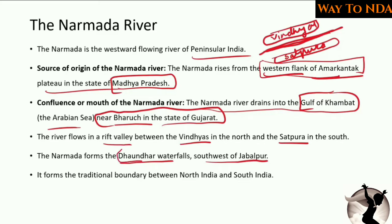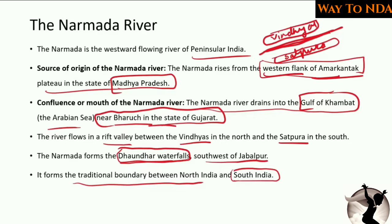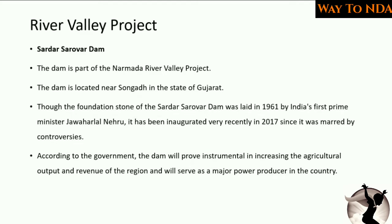The Narmada river forms the Dhowadar waterfalls to the southwest of Jabalpur. This also forms the traditional boundary between north India and south India. To summarize, Narmada originates at Amarkantak and meets the Arabian Sea at the Gulf of Khambhat in Gujarat, flowing through the rift valley between Vindhya in the north and Satpuda in the south.